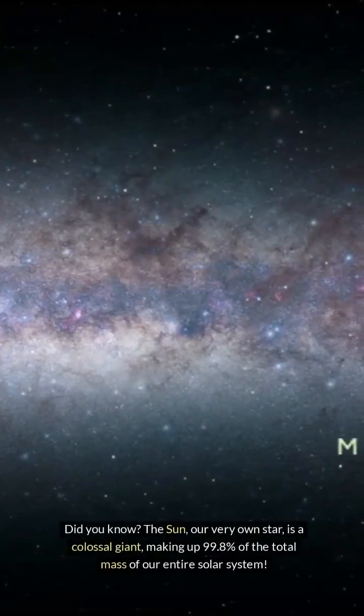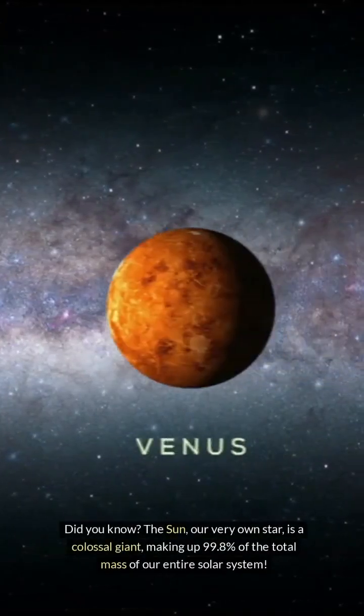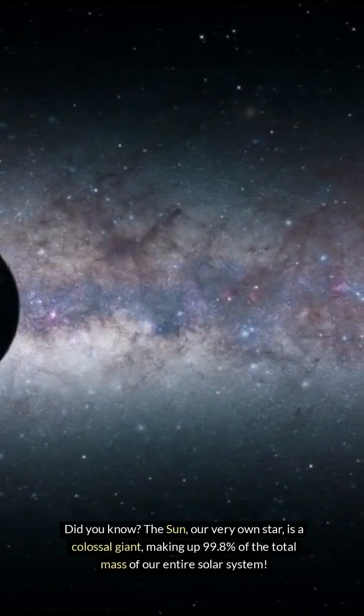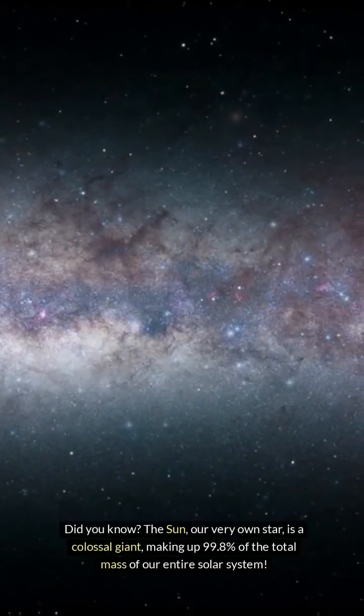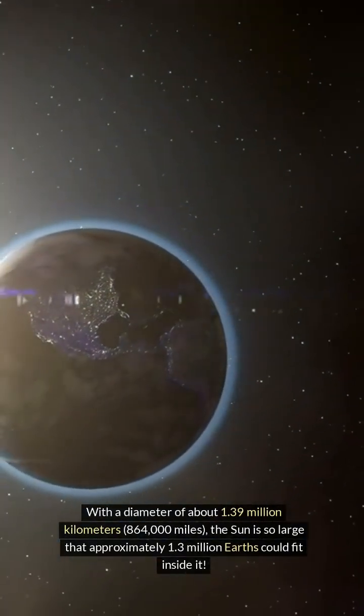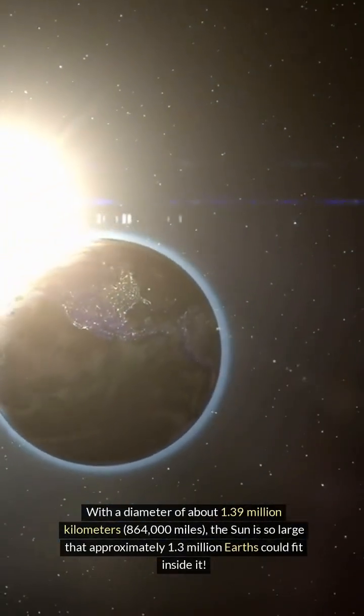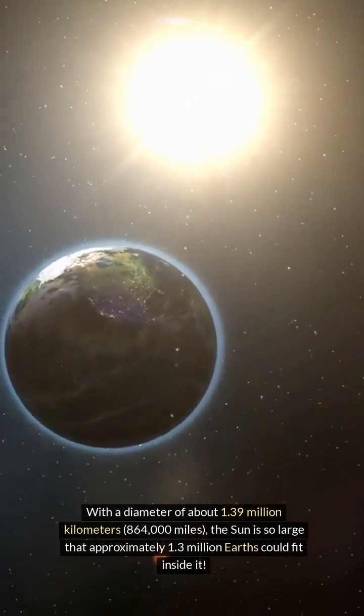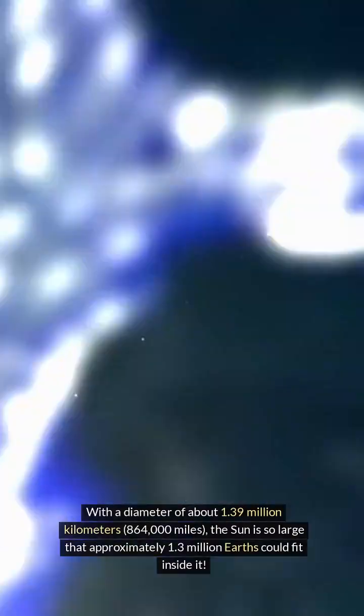Did you know? The Sun, our very own star, is a colossal giant, making up 99.8% of the total mass of our entire solar system. With a diameter of about 1.39 million kilometers (864,000 miles), the Sun is so large that approximately 1.3 million Earths could fit inside it.